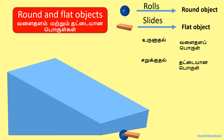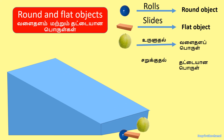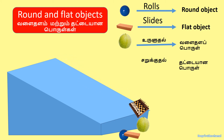It's a round object. Rolls, so it's a round object. It's a round object. Chess board slides, so it's a flat object.